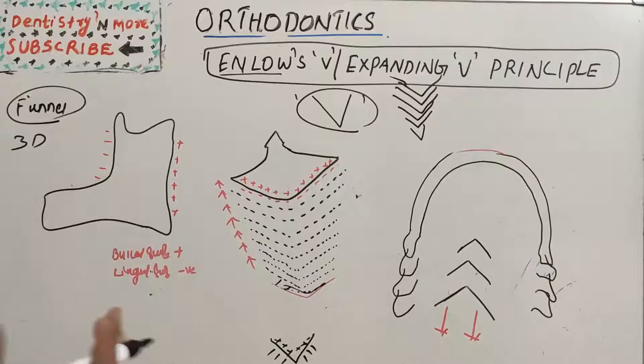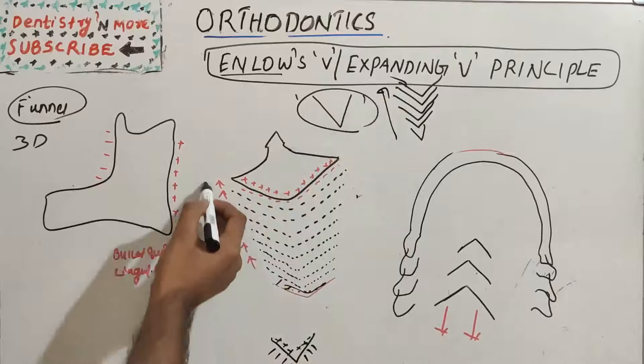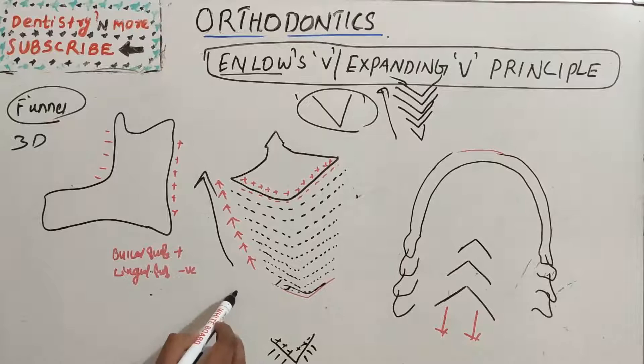According to this principle, bone deposition occurs on the inner side and resorption takes place on the outer side, which leads to the widening of the V. On the inner side, deposition happens slowly, and the V widens and becomes an expanded V. The structure translates from its original position and moves towards the wide end of the V.